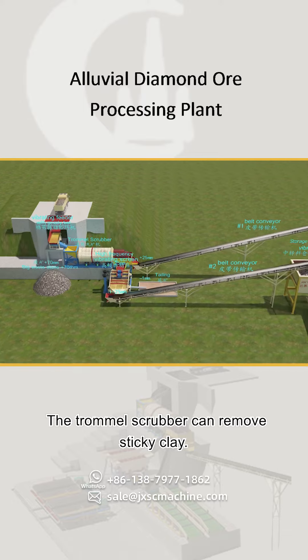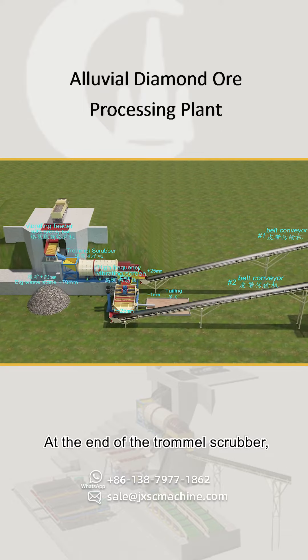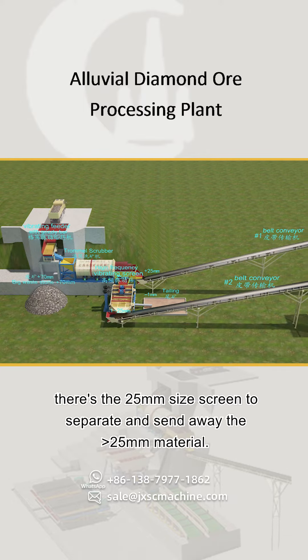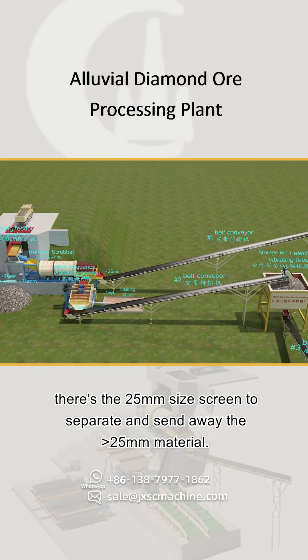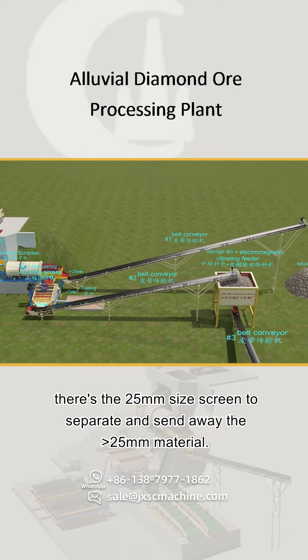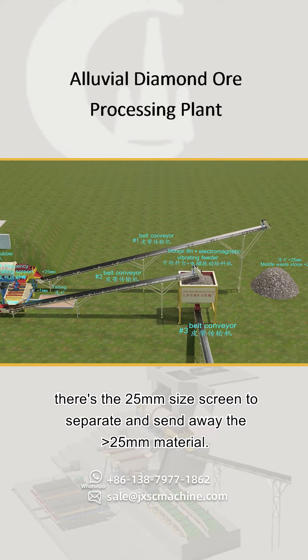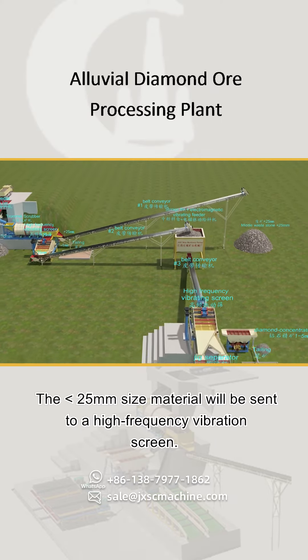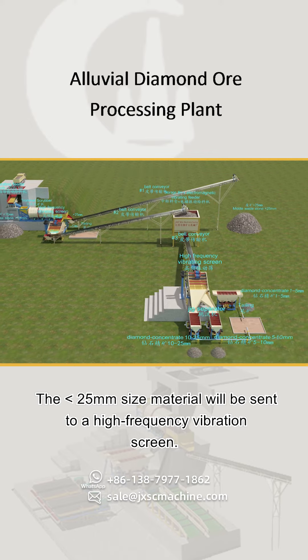The sizes less than 70 millimeters will be sent to the trommel scrubber. The trommel scrubber can remove sticky clay. At the end of the trommel scrubber, there is a 25 millimeter size screen to separate and send away material larger than 25 millimeters.